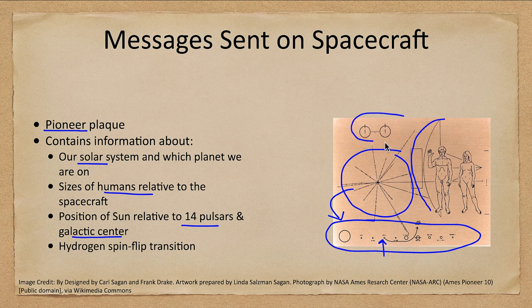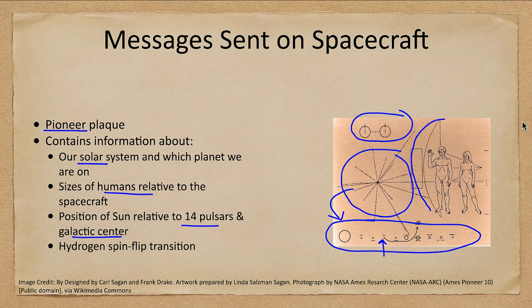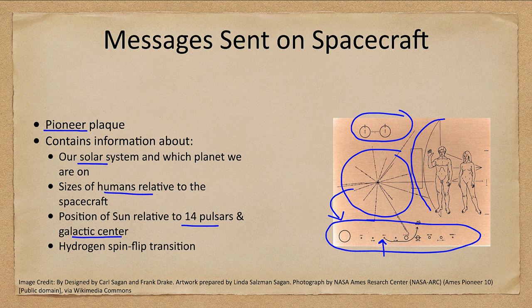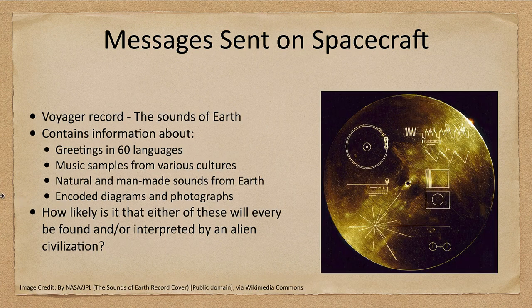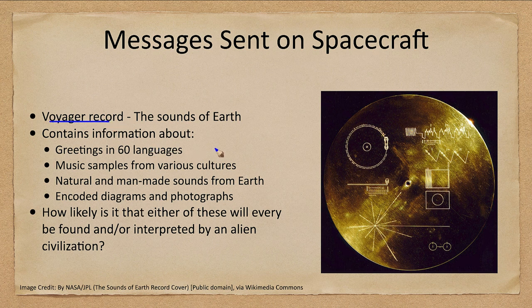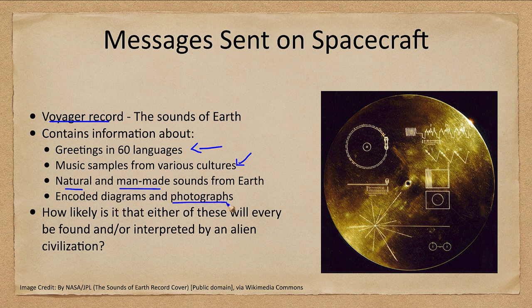And what looks like a pair of little eyes up here is the hydrogen transition. This is the spin flip transition of hydrogen which is responsible for the 21 centimeter line of hydrogen which is used to explore hydrogen gas within the galaxy. So this information has been sent out. This was what was sent with Pioneer. On the Voyager, the Voyager sent the golden record with the sounds of Earth including greetings in many languages, different music samples from various cultures on Earth, natural and man made sounds from Earth, and encoded diagrams and photographs.